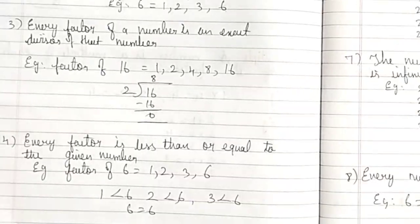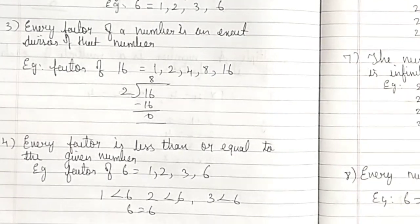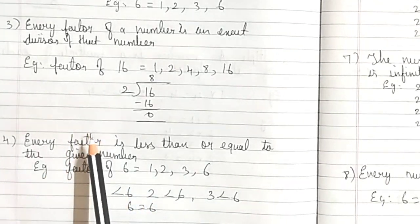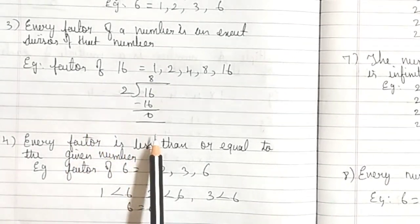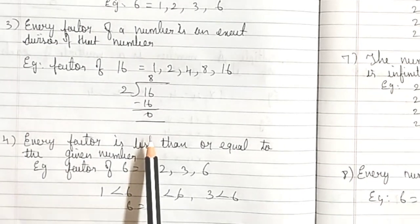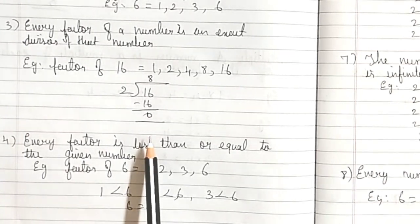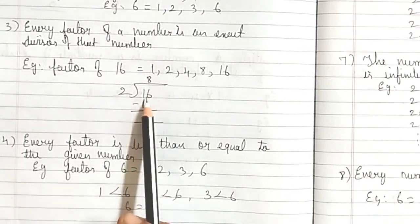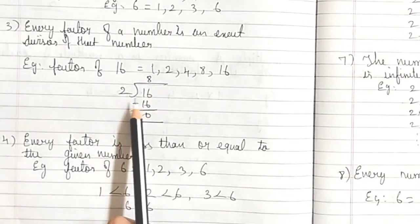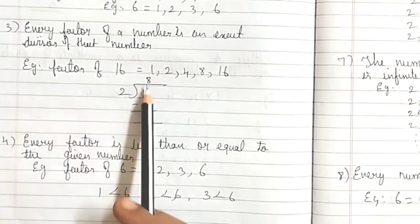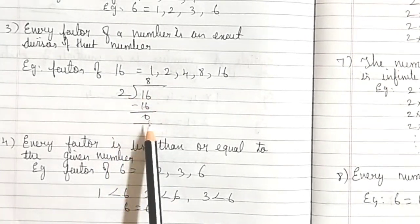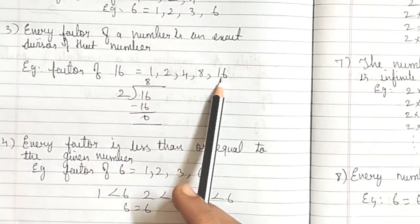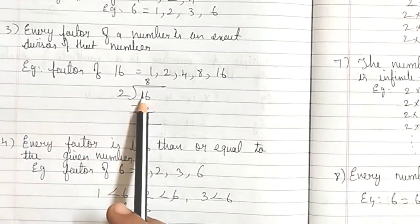Third: Every factor of a number is an exact divisor of that number. Every factor is a divisor of that number. Exact divisor means there is no remainder. For example, when we divide 16 by 2, 2 eights are 16, and 16 minus 16 is 0 — there is no remainder. So every factor of a number is an exact divisor of that number.